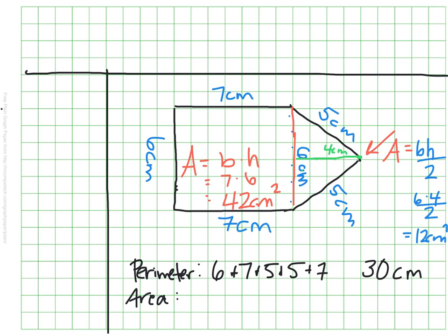And this got a little messier than I wanted to here, but the idea is then that I would take my 42 centimeters from my rectangle and add it to my 12 centimeters of my triangle so that I can see here that my area is a total of 54 centimeters squared.